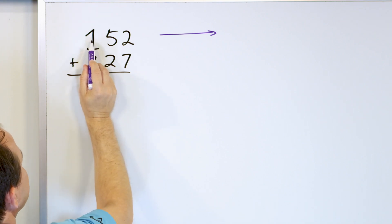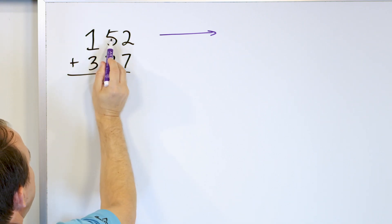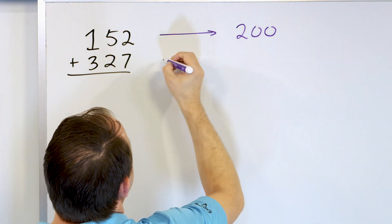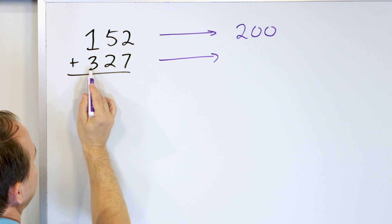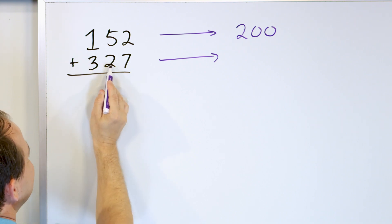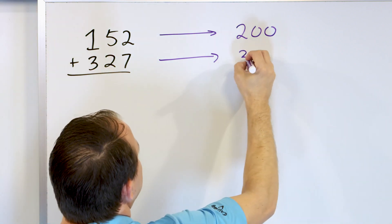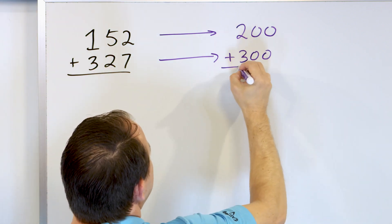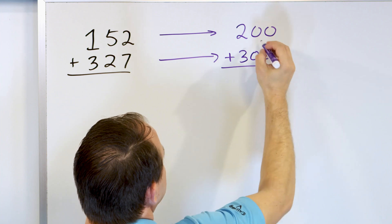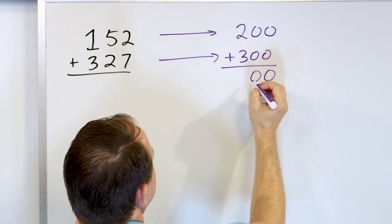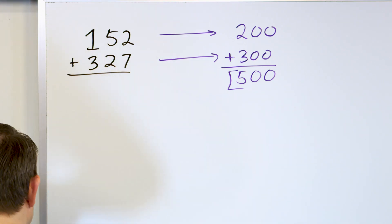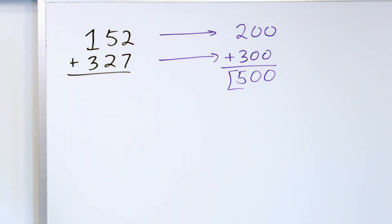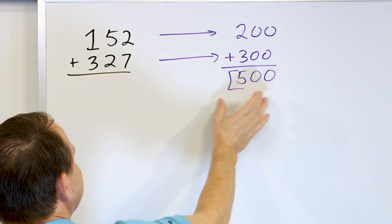For 152, this is the hundreds place. We can go up to 200 or down to 100, but the five means we round up to 200. For 327, this is the hundreds place — we can go up to 400 or down to 300. Since two is less than five, we round down to 300. Then we add: zero plus zero is zero, zero plus zero is zero, two plus three is five. The answer is 500. That's an estimate — it's not exact, but it's a good estimate.